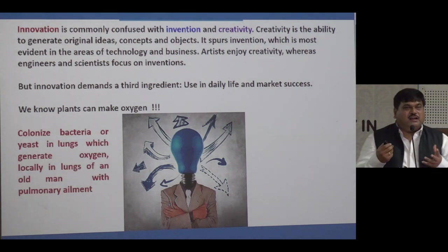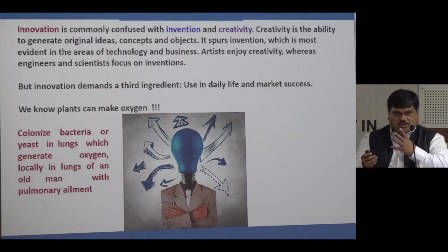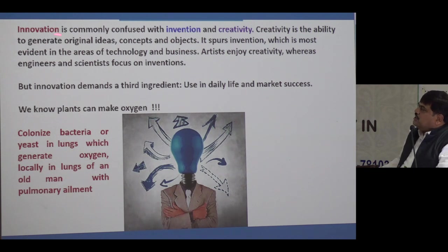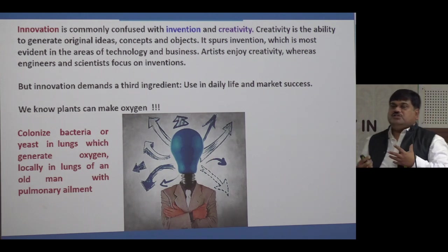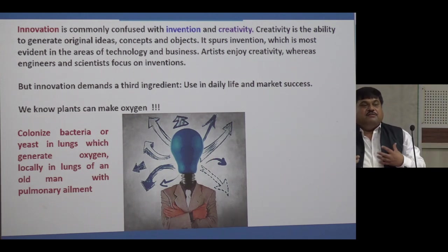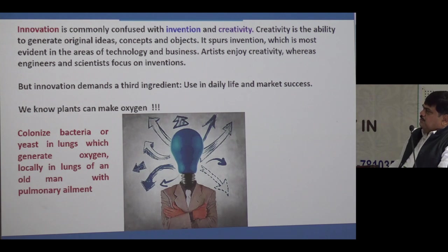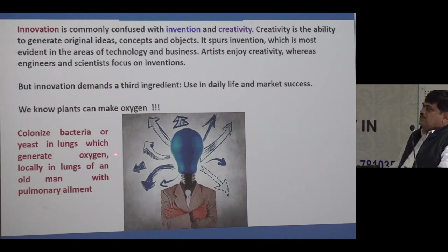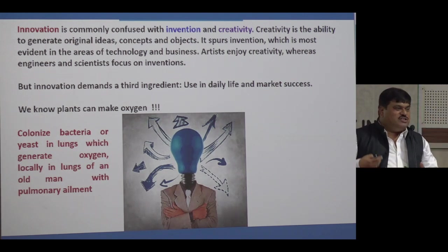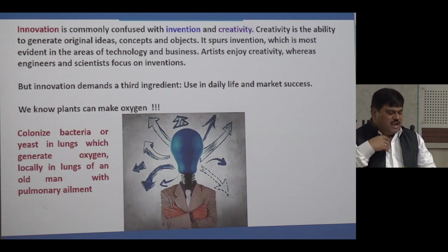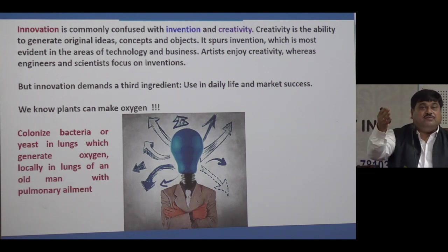Out-of-box thinking: in old age or pulmonary ailments, you cannot get sufficient oxygen because muscles cannot pull enough oxygen. Can we think about colonizing bacteria or yeast in the lungs in a controlled manner — genetically engineered to generate oxygen locally inside the lungs of an old man with a pulmonary ailment — to take care of his oxygen supply to the blood? I don't do this research, but this is the way one should think.